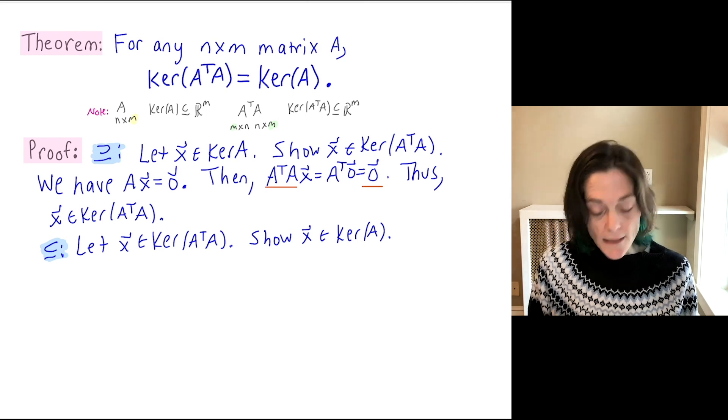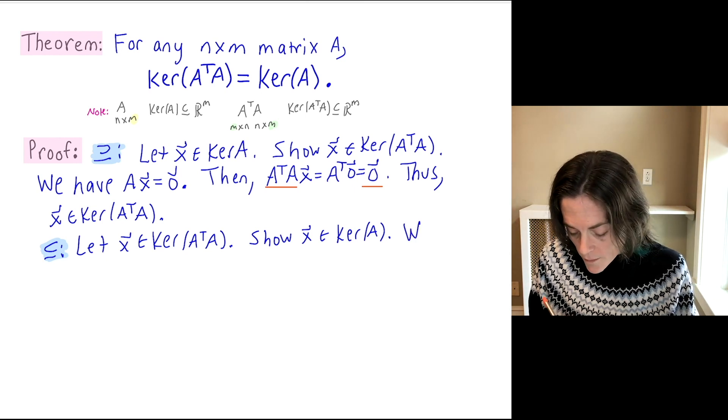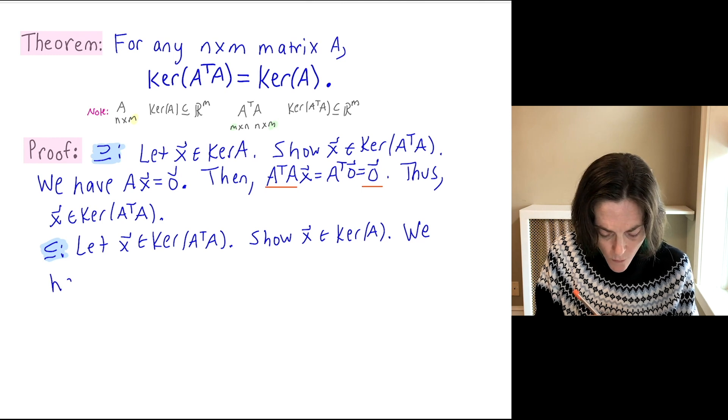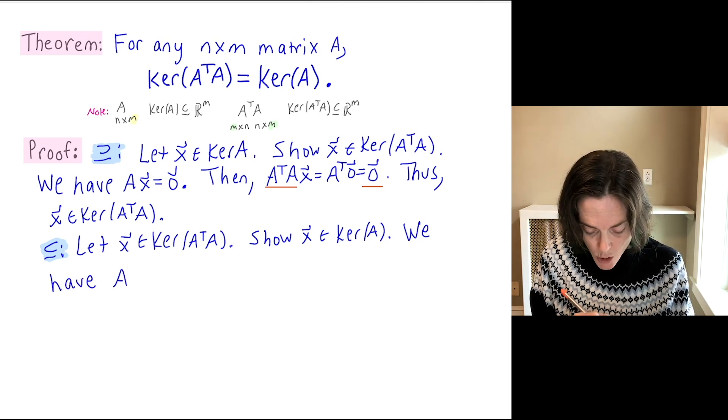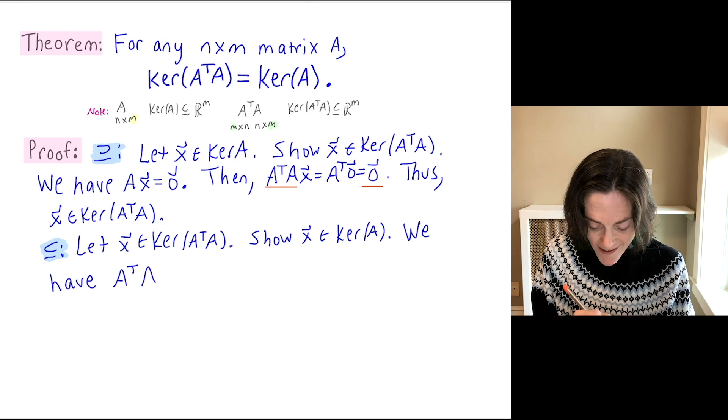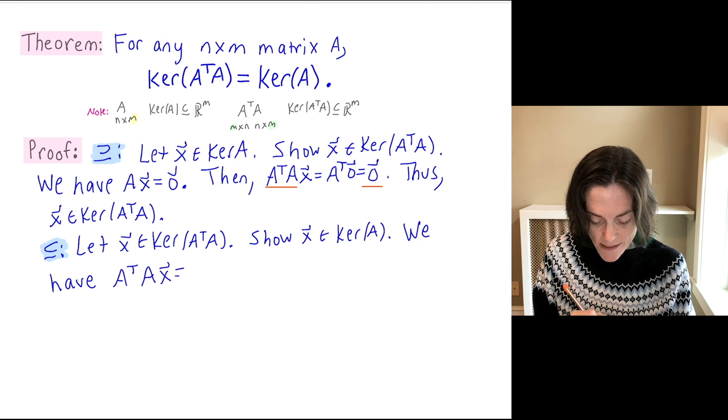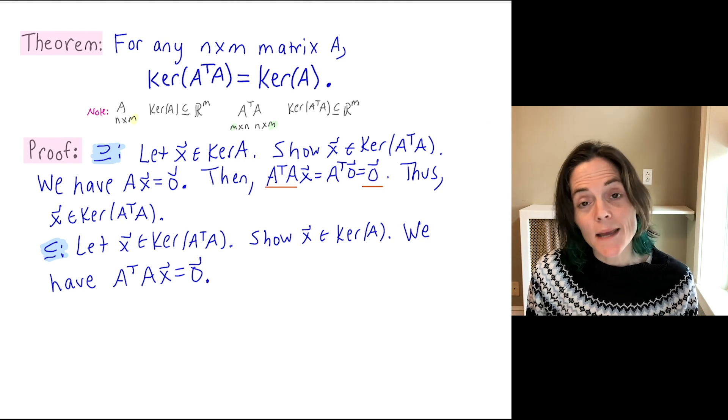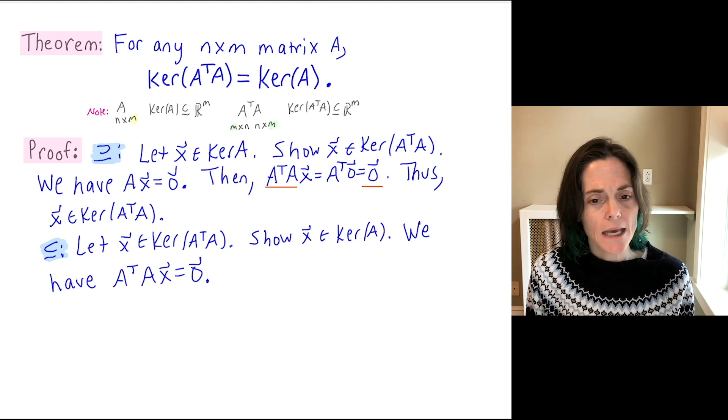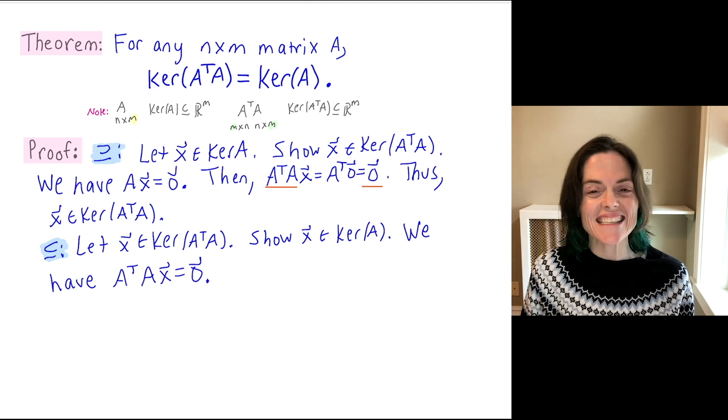Well, similar to before we have, we can unravel what it means to be in the kernel of a matrix. And it says that A transpose A x equals zero. It might seem like we are stuck, because I want to conclude Ax equals zero. That would say x is in the kernel of A.